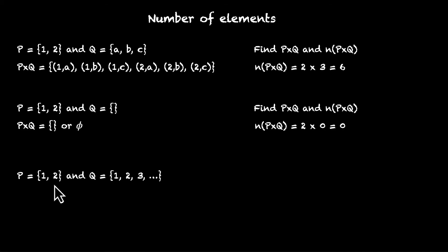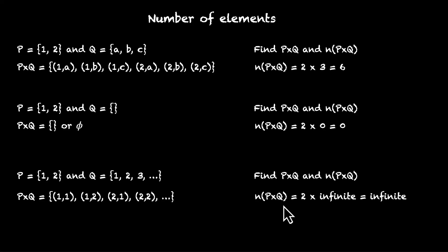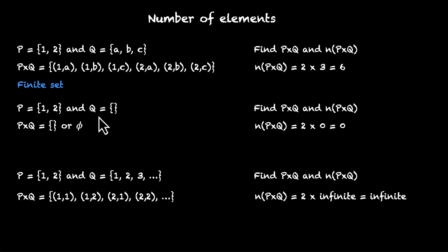What about the third case? P has the same elements and this time Q has a very large list. The Cartesian product will be (1,1), (1,2), (1,3) and so on — this will never end. It will also have elements like (2,1), (2,2), (2,3) and so on. Because Q has infinite elements, P times Q will also have infinite elements. The number will be 2 times something infinite, which gives us something infinite. So we have covered three cases: in the first, both P and Q had finite elements, so their Cartesian product was a finite set. In the second, one set was empty, so the Cartesian product was also an empty set. In the third, one was an infinite set, so we got an infinite Cartesian product.